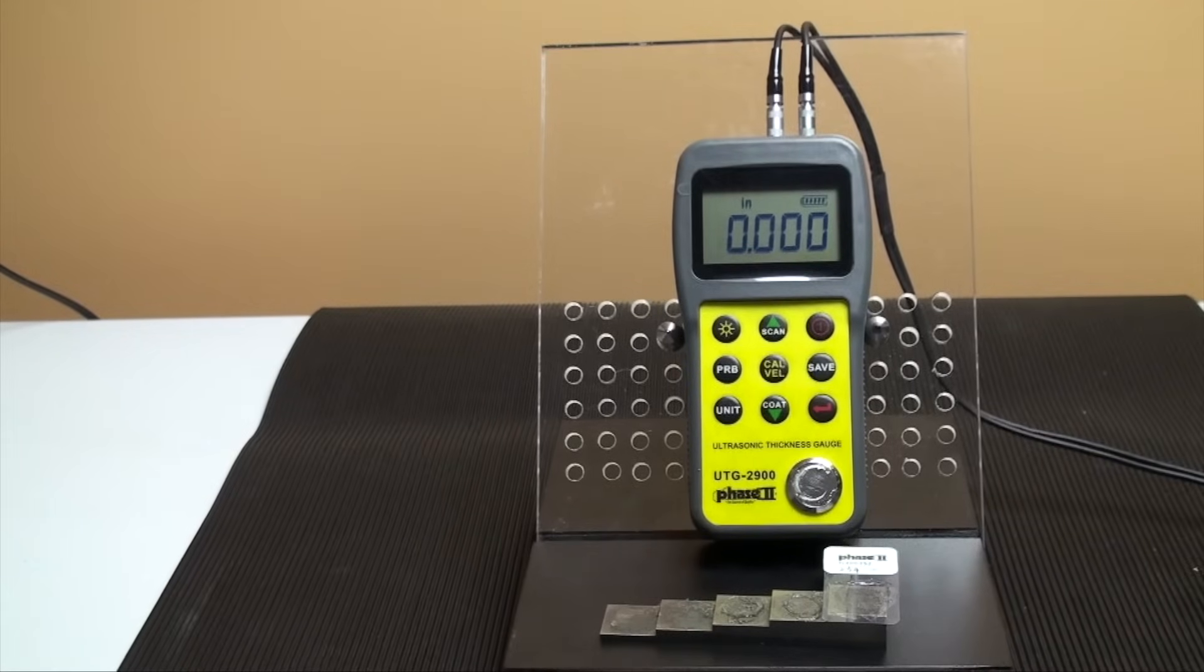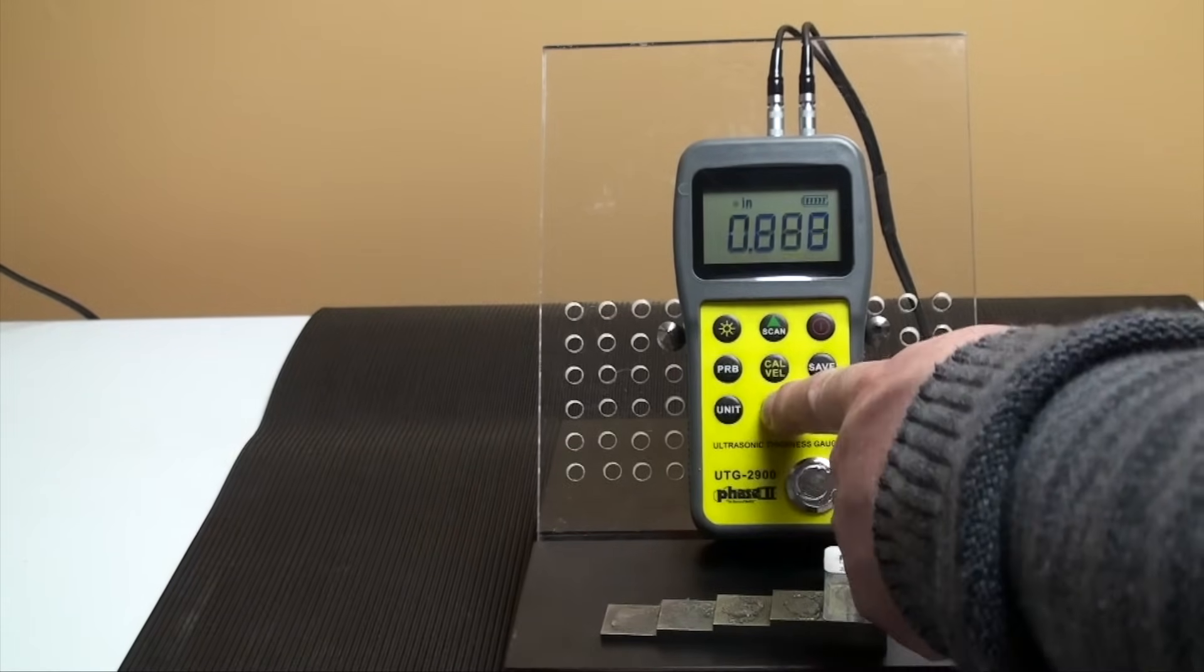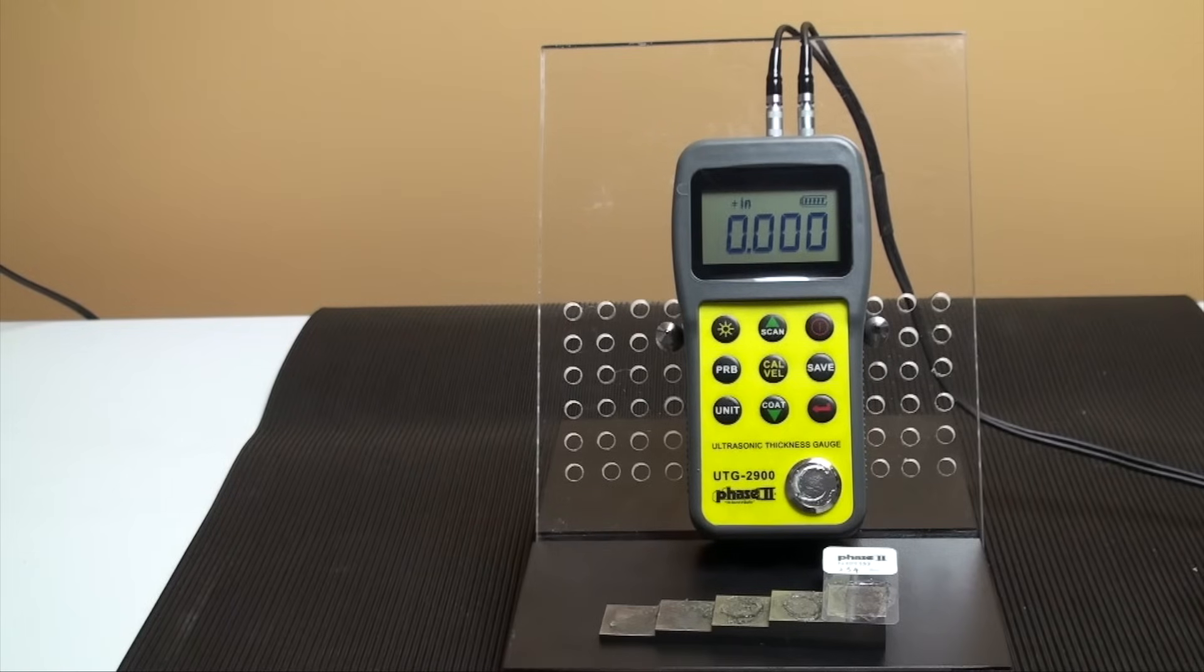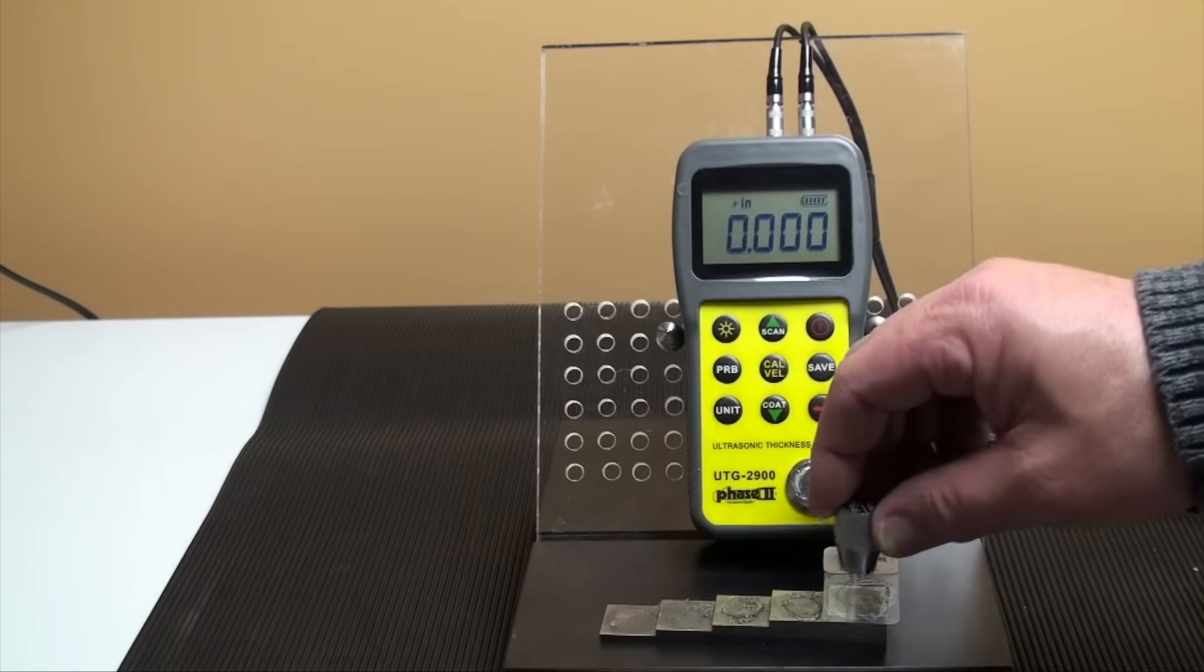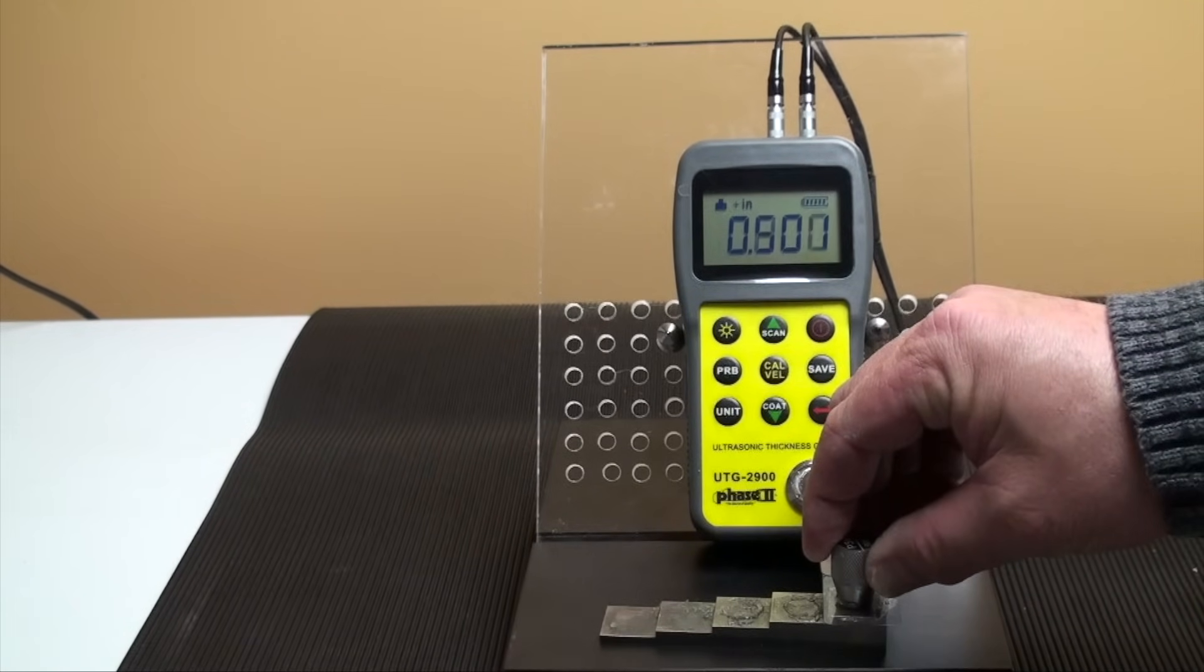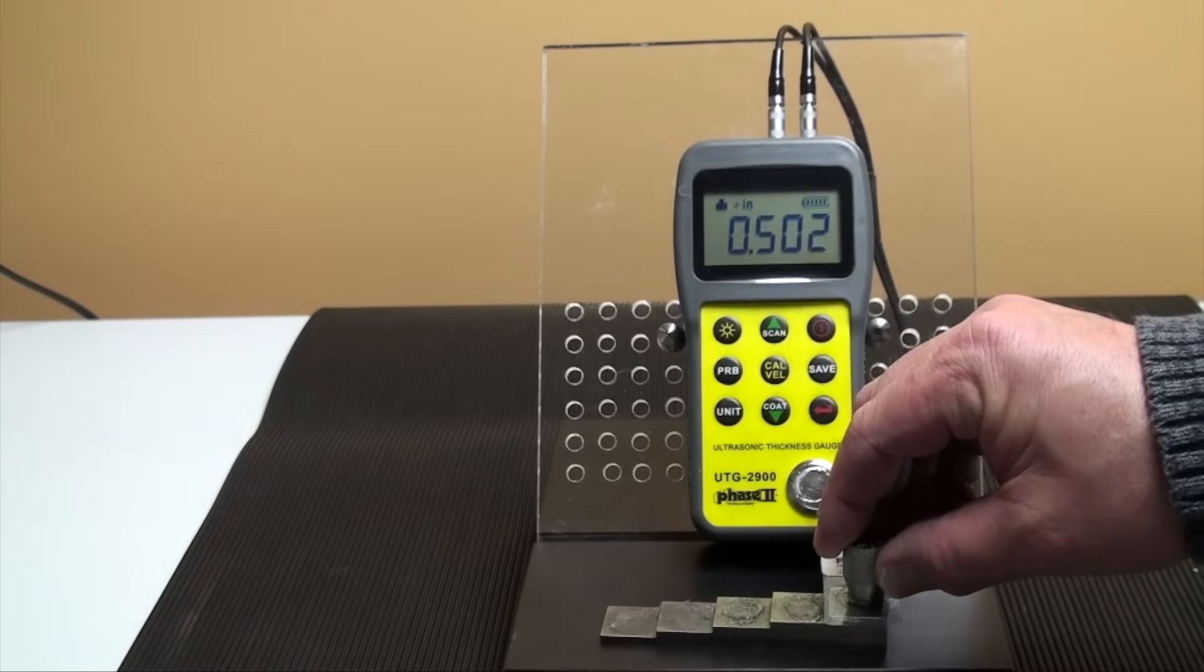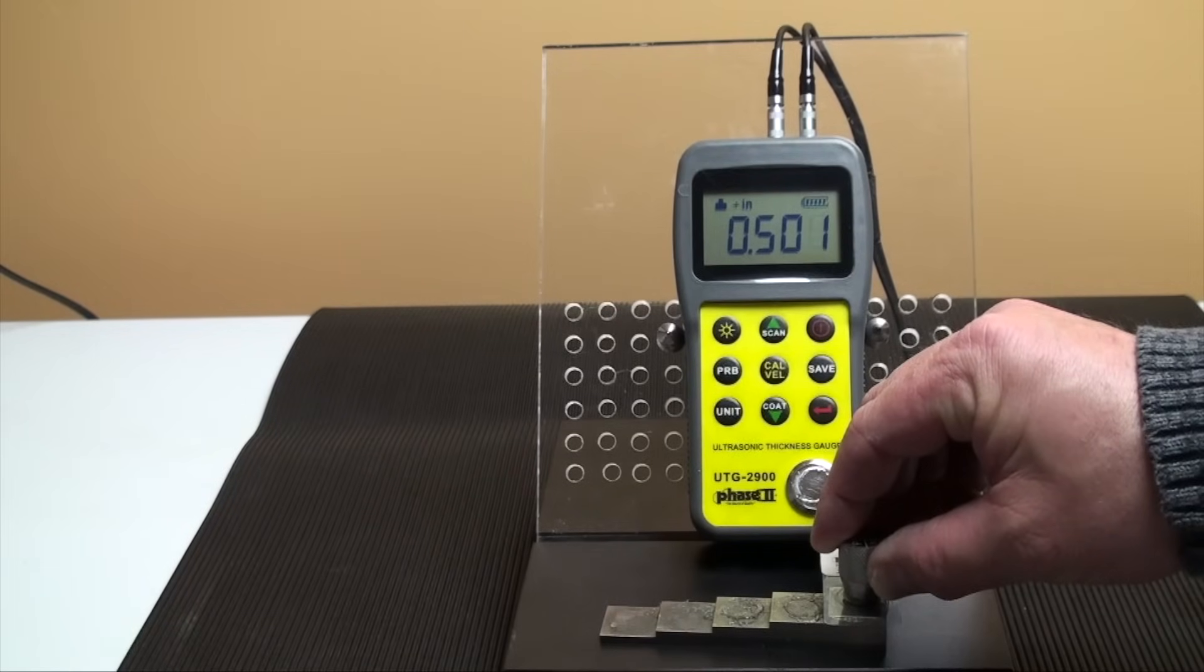To test it through coat mode, press the coat button and look for the display to read EE. This is echo to echo mode. It will allow the user to take a reading on a coated surface while eliminating the thickness value of that coating. It is suggested to do a probe zero on the test block when switching to this mode before testing.